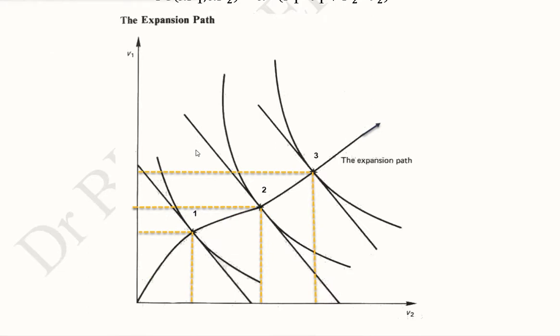Now we can focus on the diagram of the expansion path. This is the first equilibrium, and then there is a second equilibrium, third equilibrium. And in the long run it is happening where v2 and v1, both of them are allowed to vary. So once we have these three points or more than three points, we can join them.